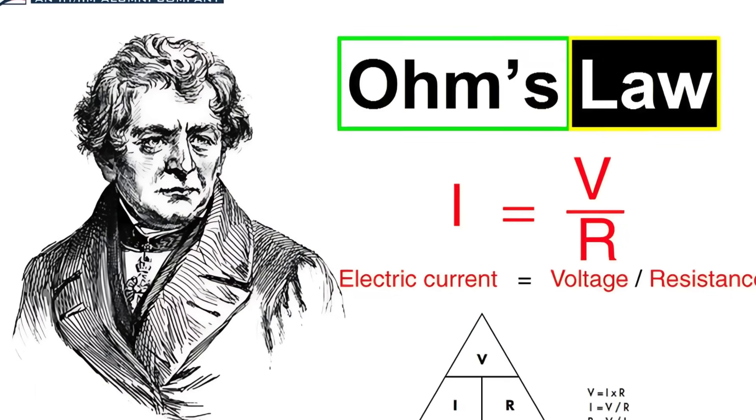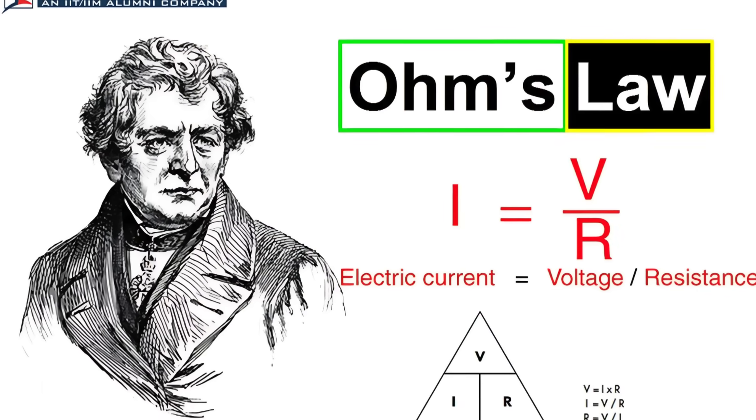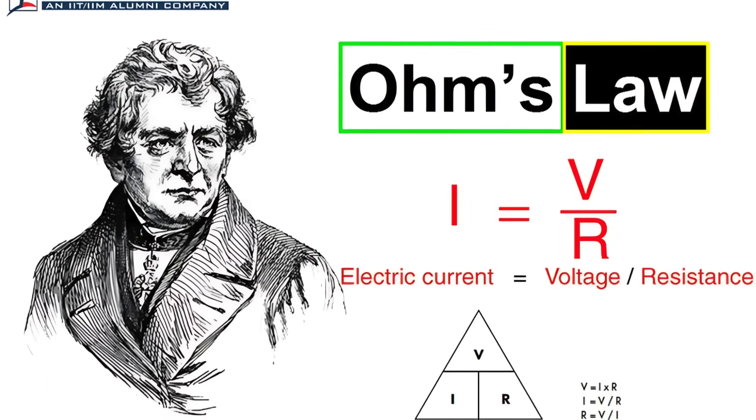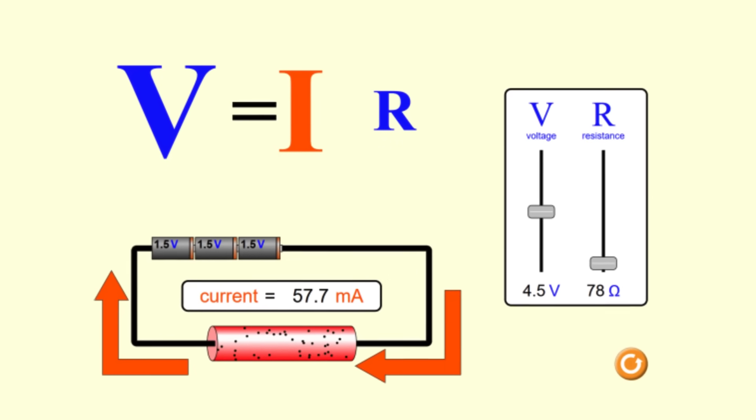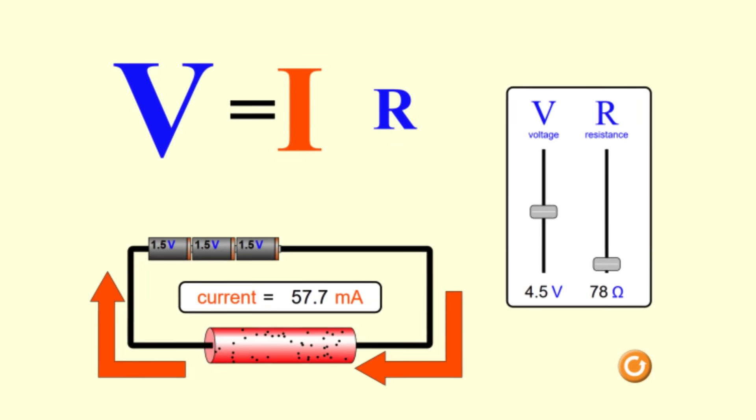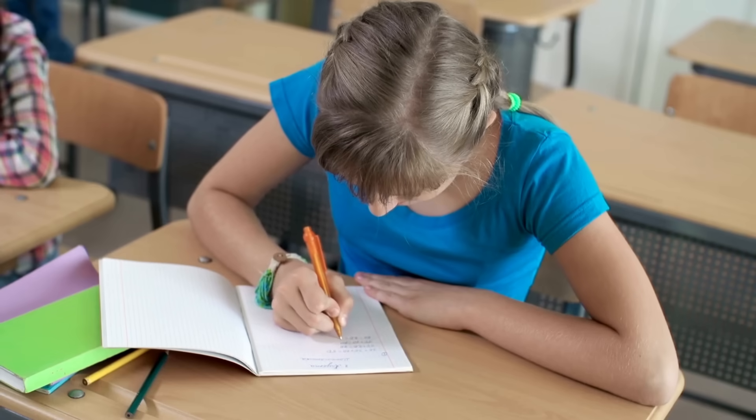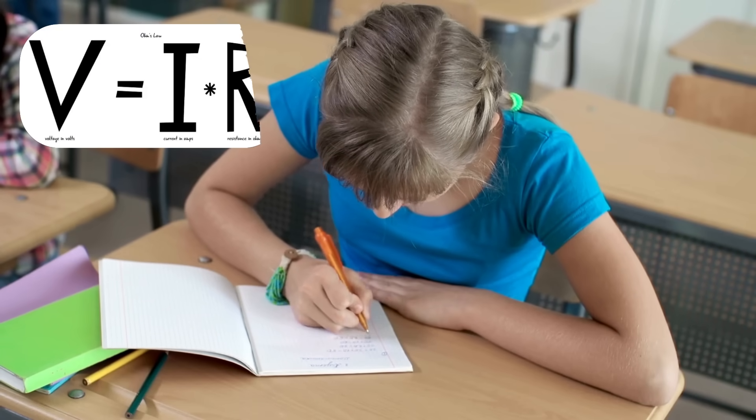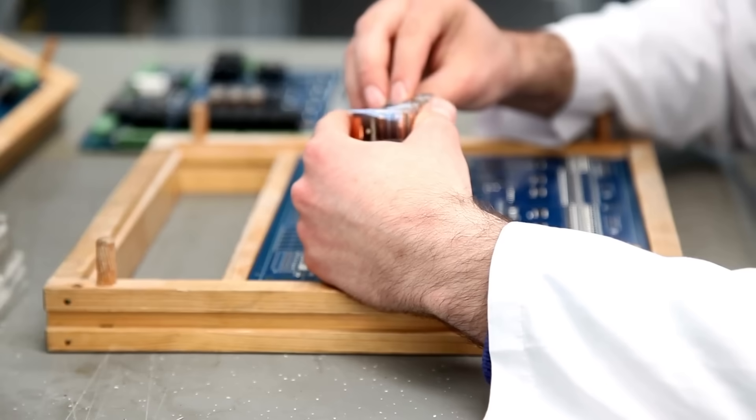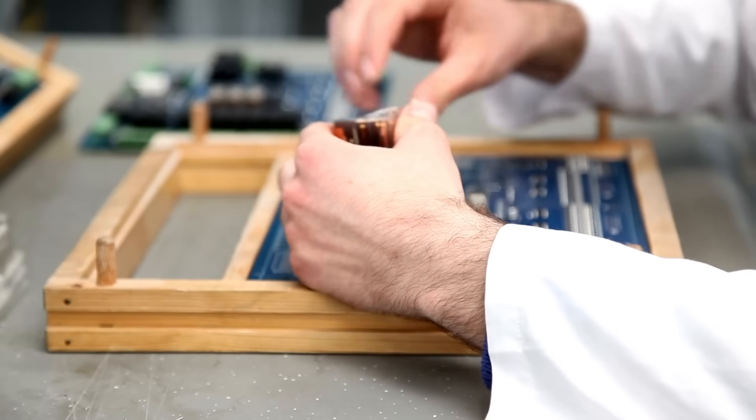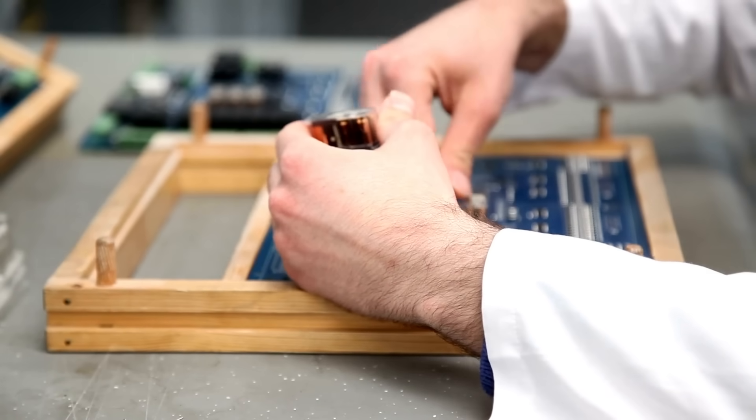Resistors follow Ohm's law, a fundamental principle in electronics that states that voltage across a resistor is equal to the product of the current flowing through it and its resistance. Mathematically, it is represented as voltage equals current times resistance. This simple equation helps engineers and hobbyists design circuits with precise electrical properties.